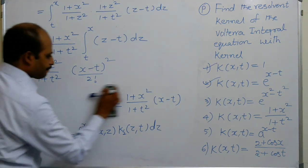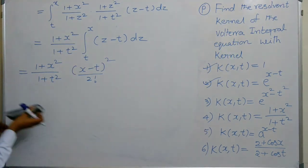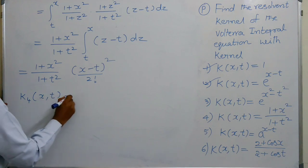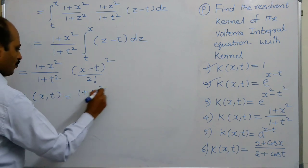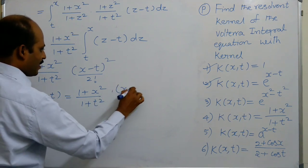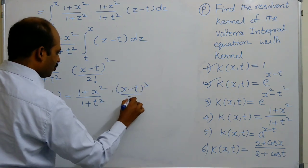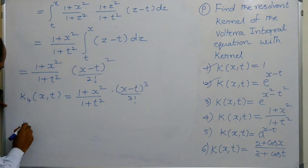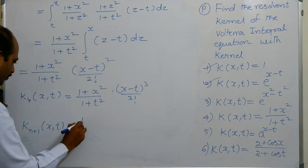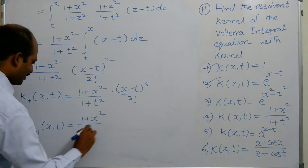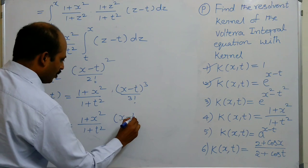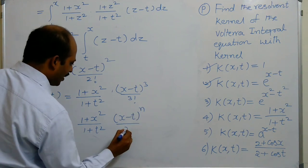Similarly, K4 of X, T equals (1 + x²)/(1 + t²) times (X minus T)³/3! and so on. In general, K(n+1) of X, T equals (1 + x²)/(1 + t²) times (X minus T)^n / n!.